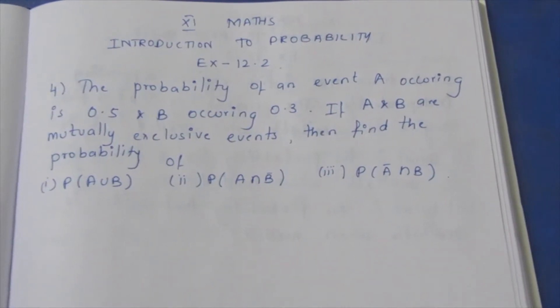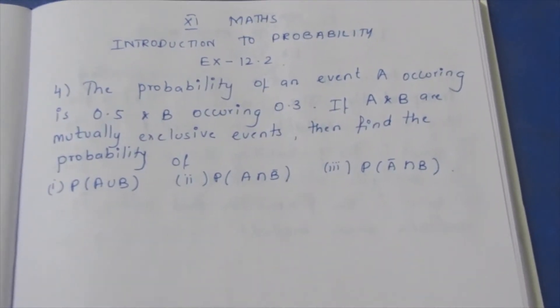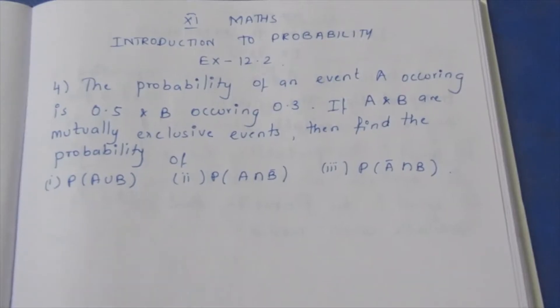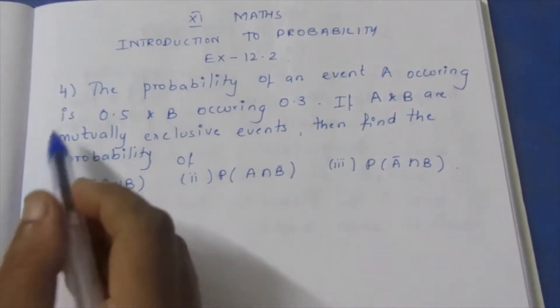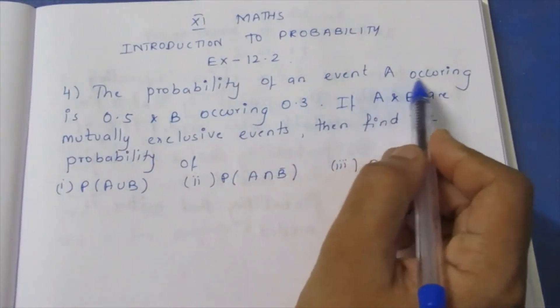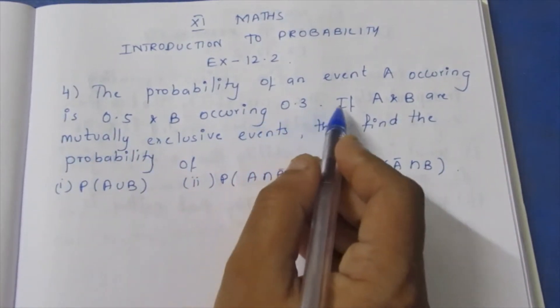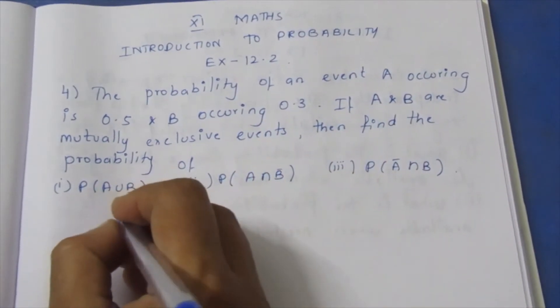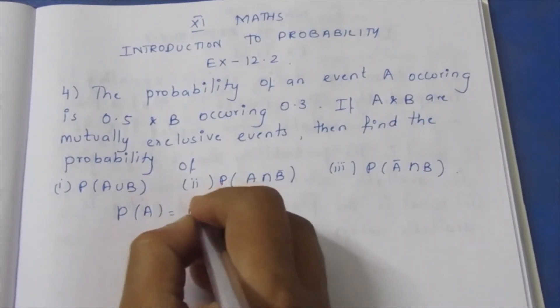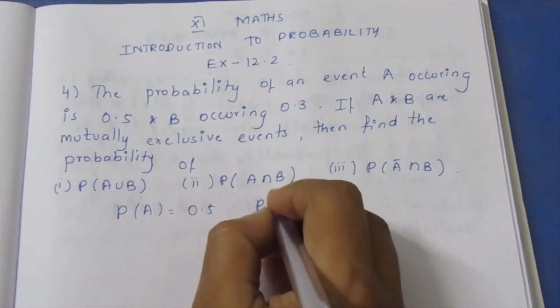Hello viewers, I am Aitli. In Class 11 Maths Introduction to Probability Exercise 12.2, question 4 states: the probability of event A occurring is 0.5 and B is 0.3. So P of A equals 0.5, P of B equals 0.3.